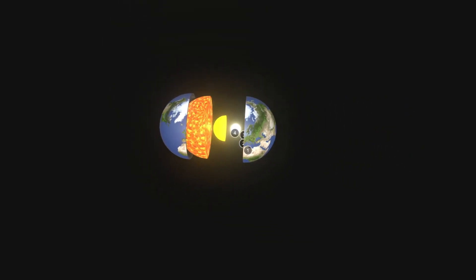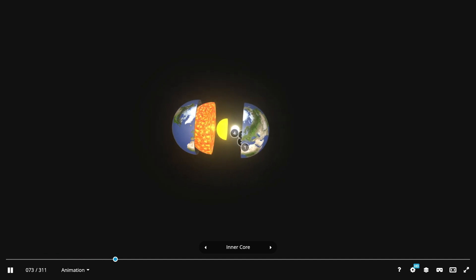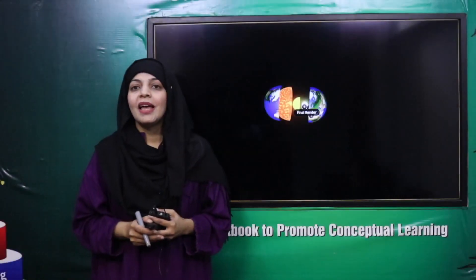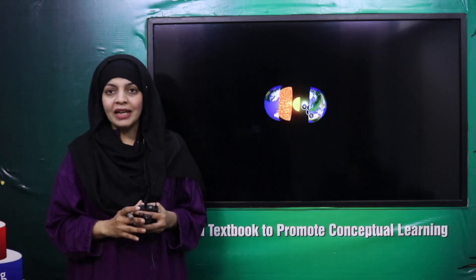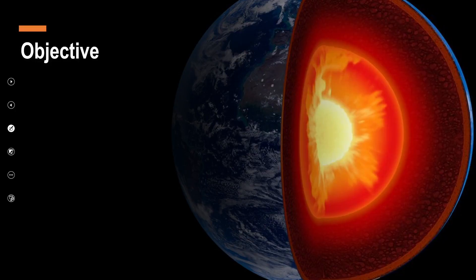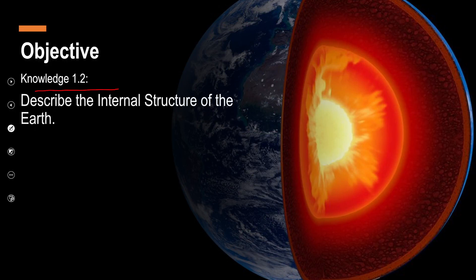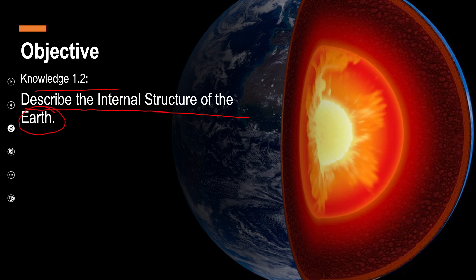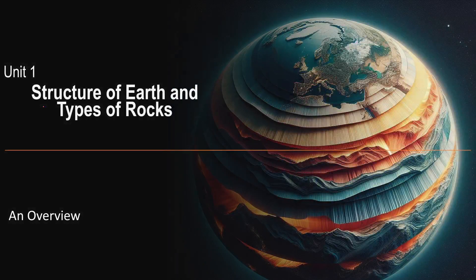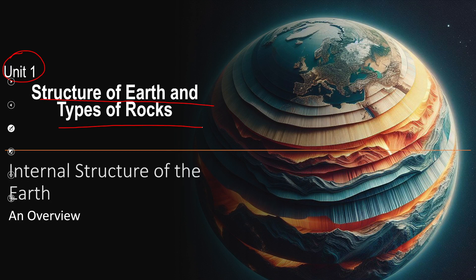This is how your earth looks from the inside. Have you ever thought about what your earth looks like from inside? So my dear students, what is today's topic? Very good, you have guessed it right - today we are going to study about the internal structure of the earth. Today's objective is Knowledge 1.2 from your books: describe the internal structure of the earth.